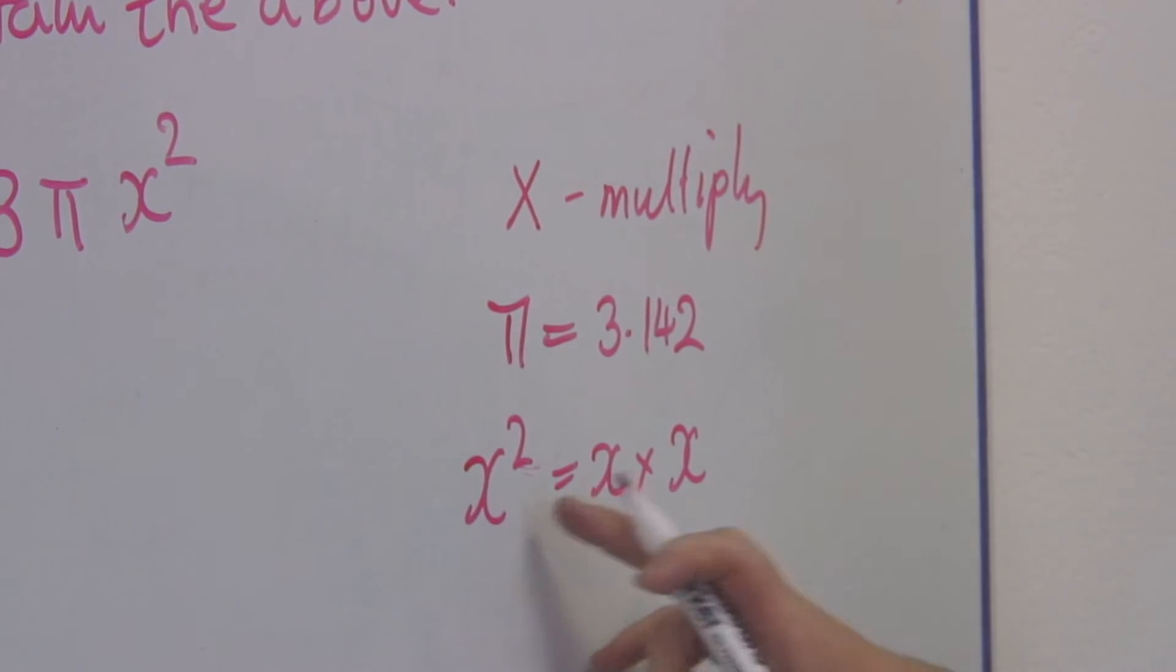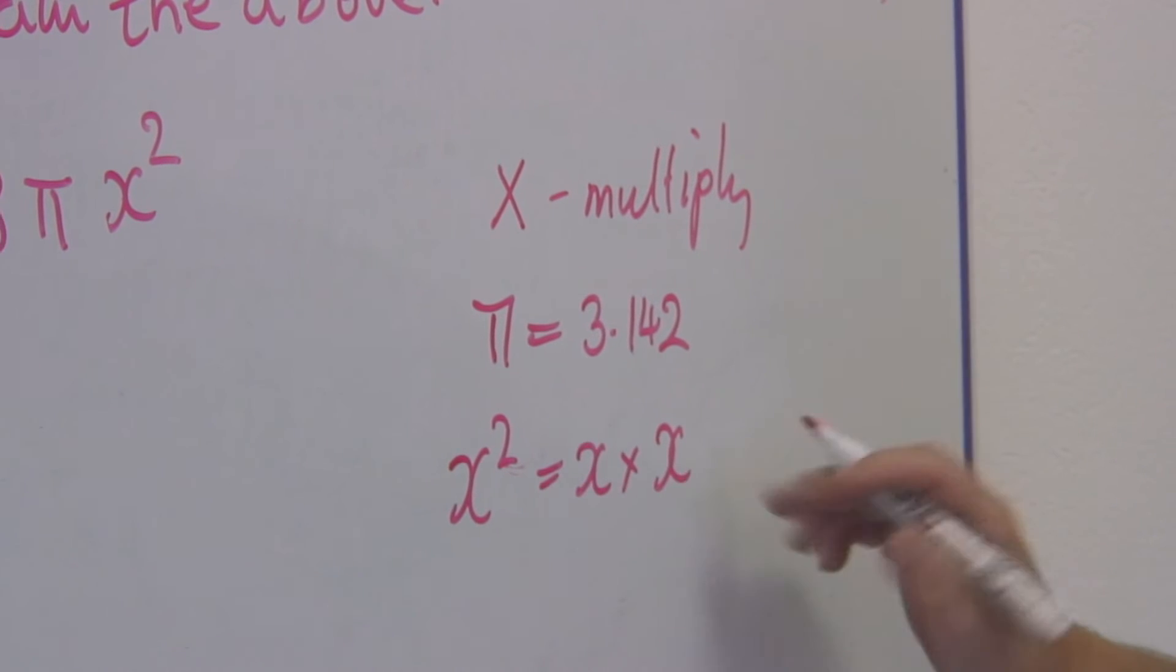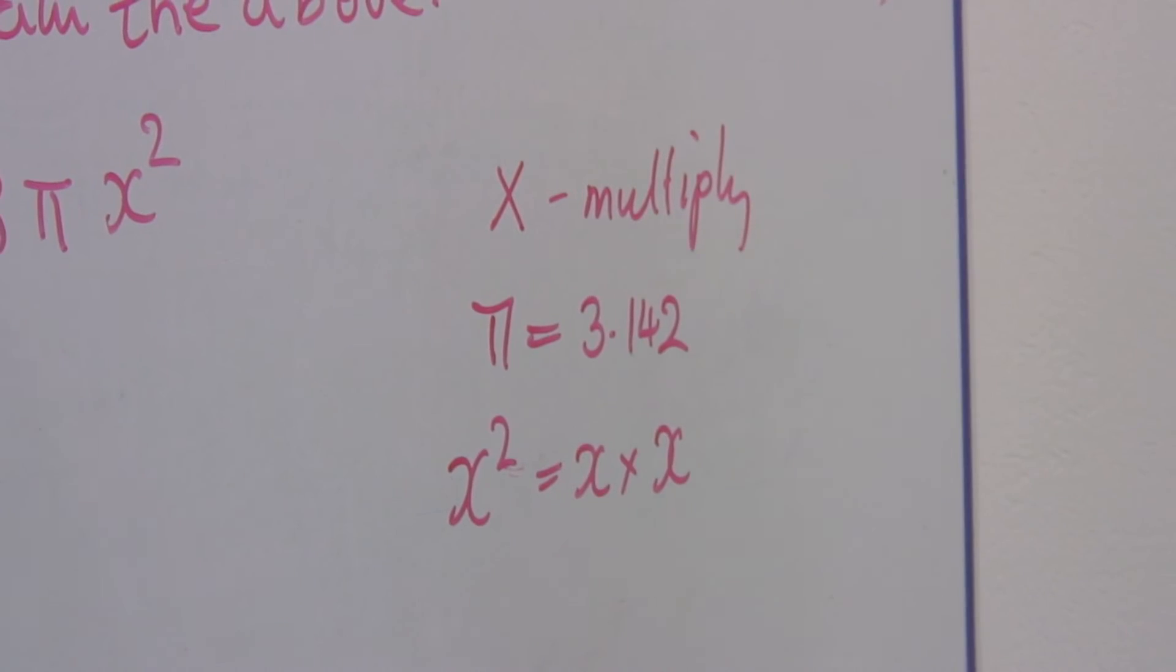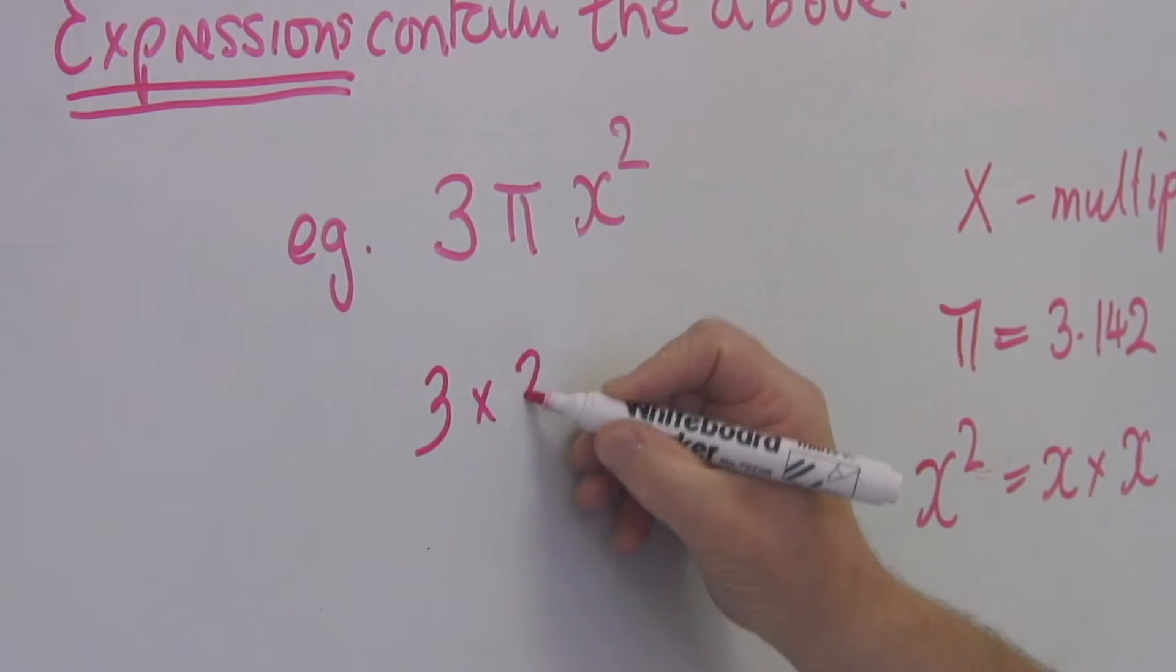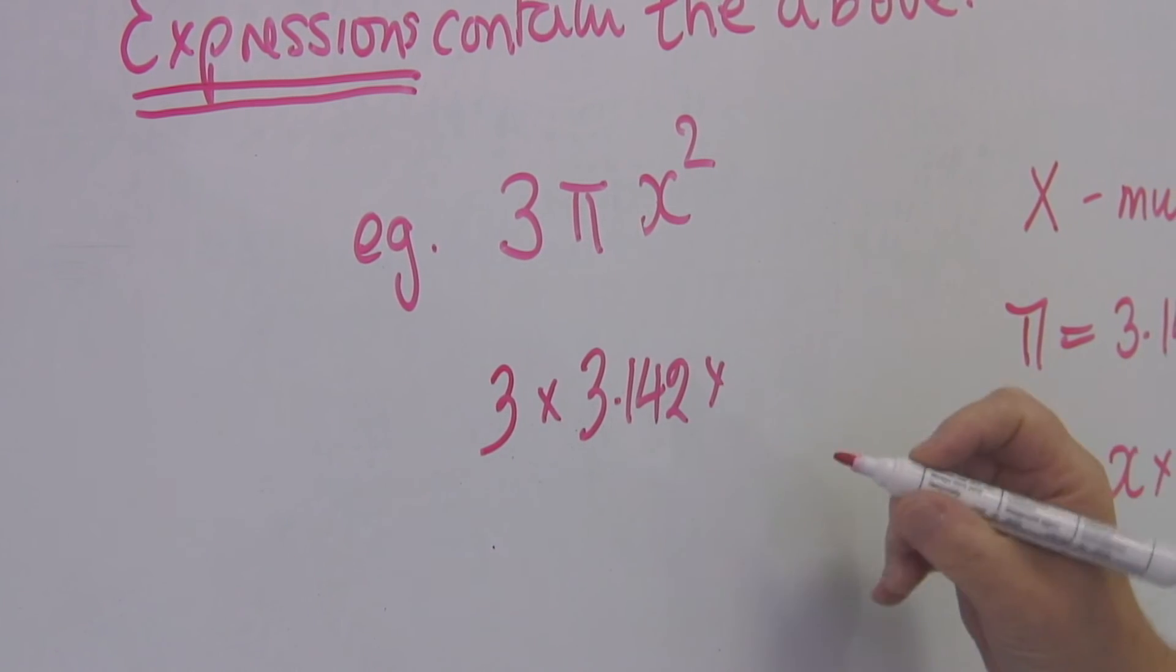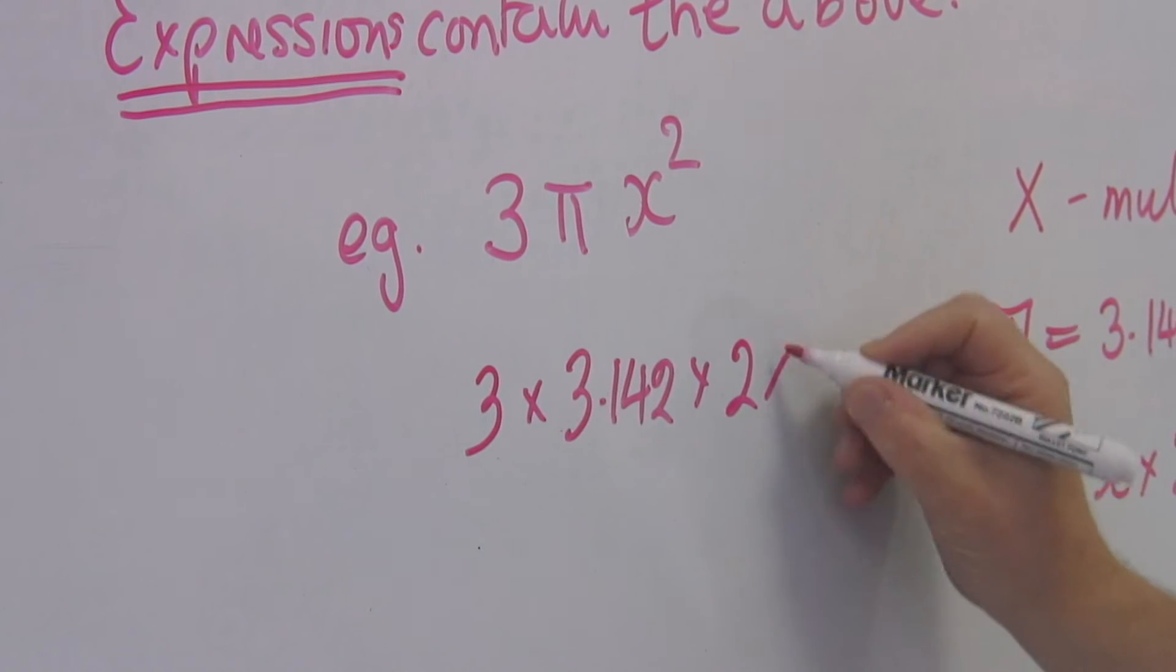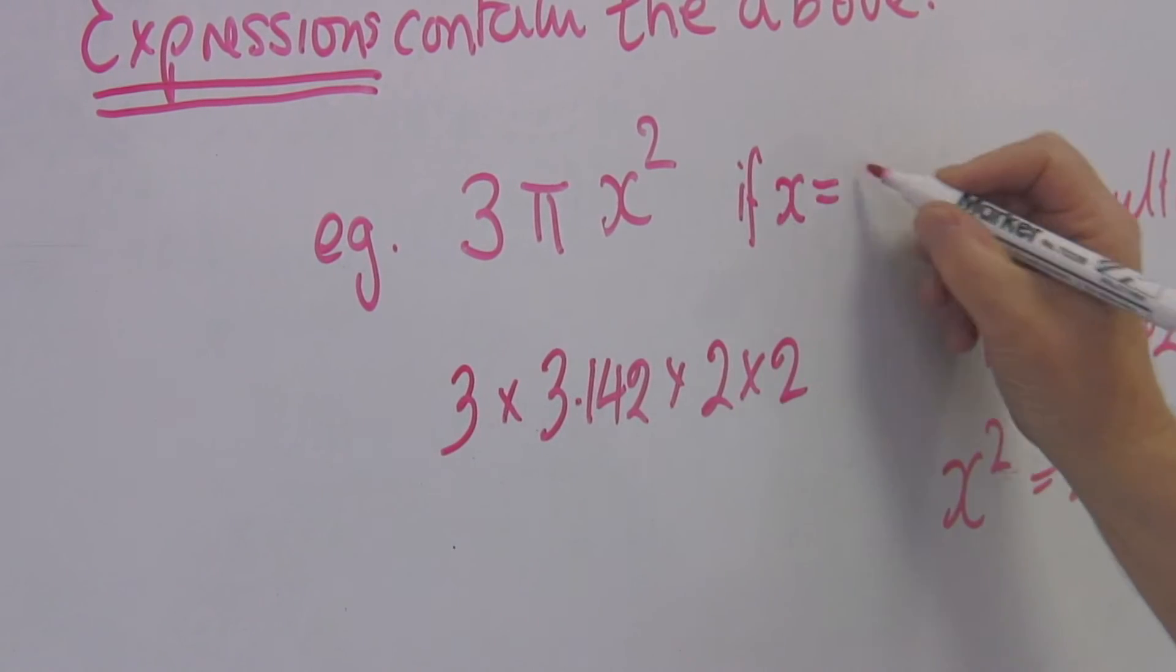If x is 2, x squared is 2 times 2, which is 4. So this expression evaluates to 3 times 3.142 times x squared. Let's say that is 2 times 2, if x equals 2.